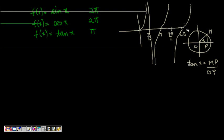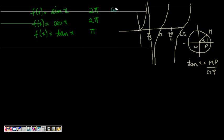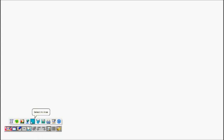Hence tan x is periodic with period π. Similarly, cosec(x) is periodic with period 2π, sec(x) is periodic with period 2π, and cot(x) is periodic with period π. Now let's solve one question.